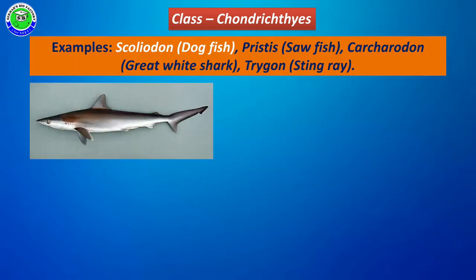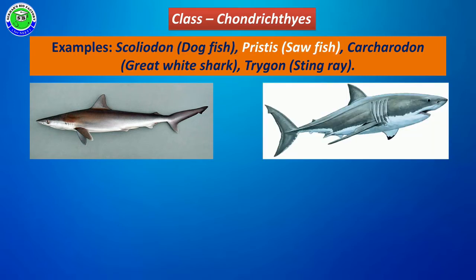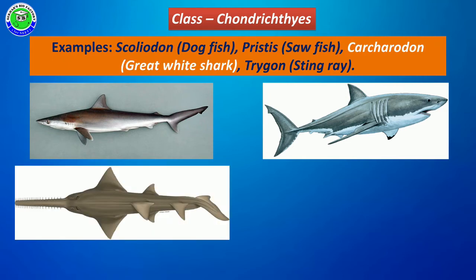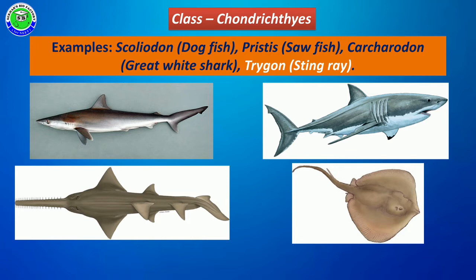Some examples of Chondrichthyes include: Scoliodon, also called Dogfish; Pristis, also called sawfish; Carcharodon, called the great white shark; and Trigon, also called stingray, which is poisonous in nature.